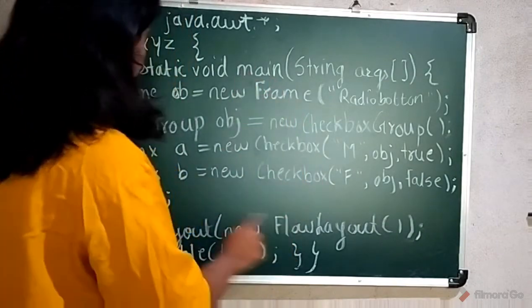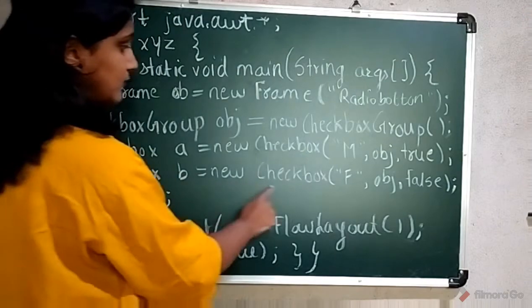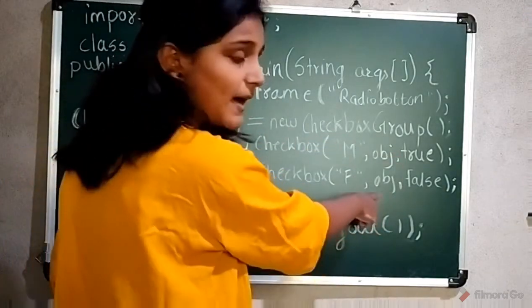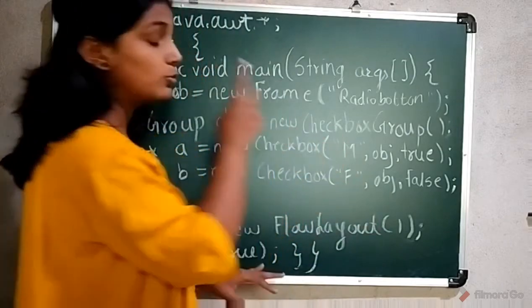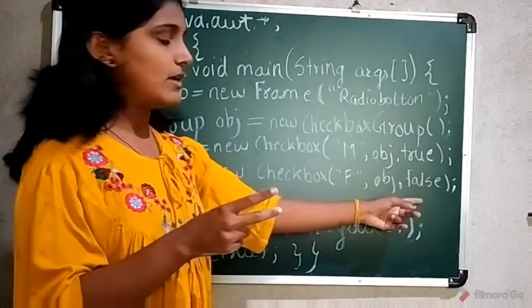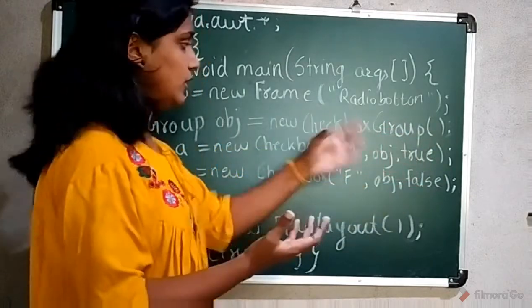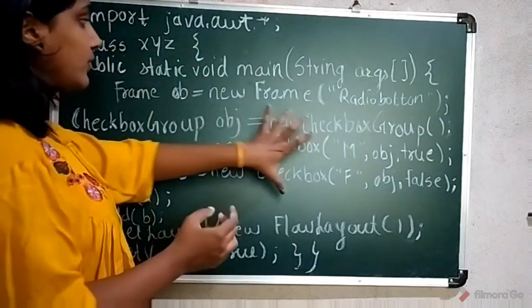Here checkbox b equals new, same object obg, same checkbox group reference I have passed. So I have created two radio buttons, one is true and one is false. By default I have kept as per the user requirement.